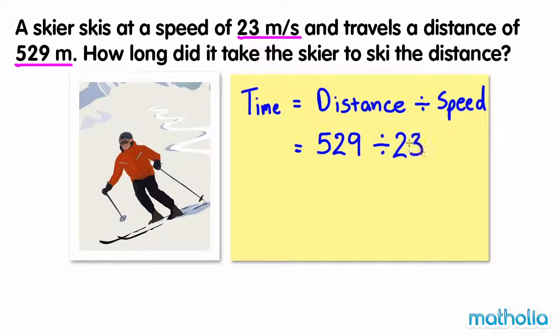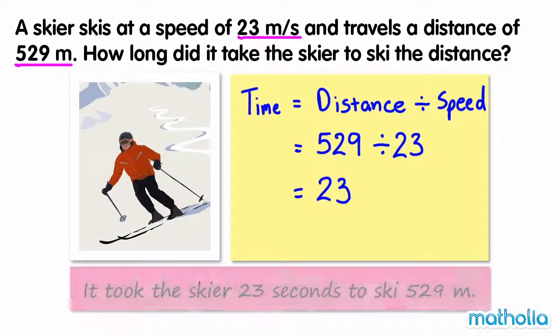529 divided by 23 equals 23. Our time unit is seconds, so it took the skier 23 seconds to ski 529 metres.